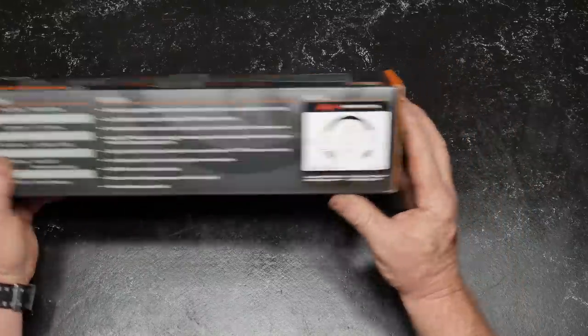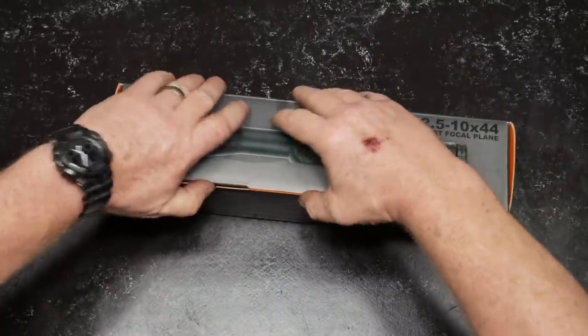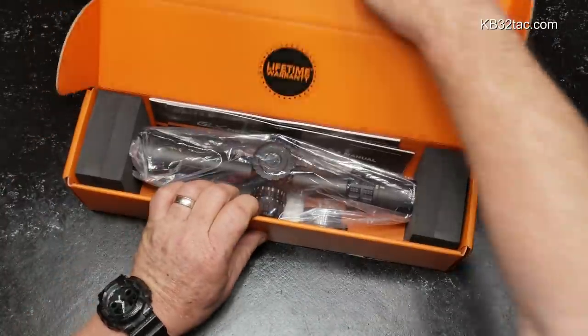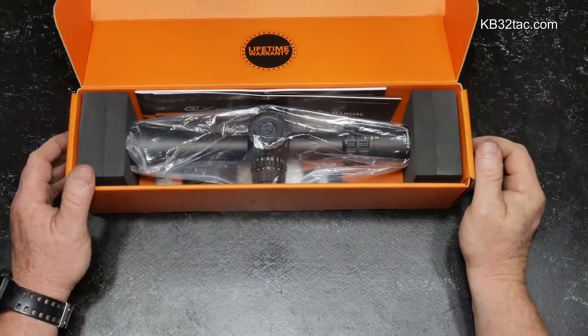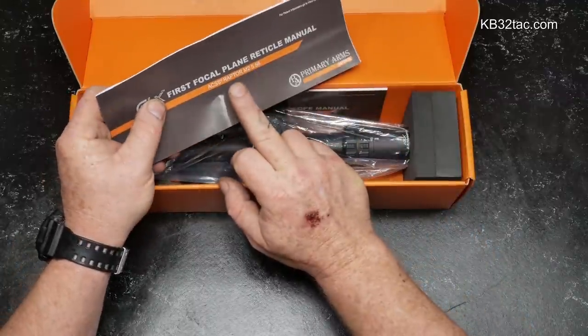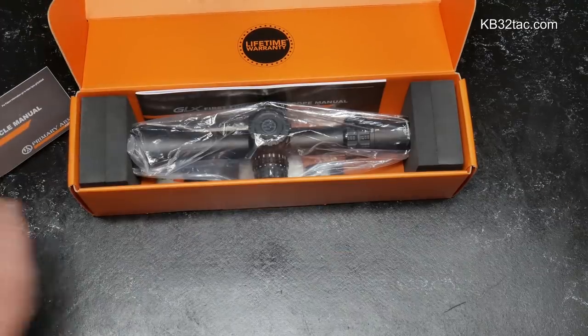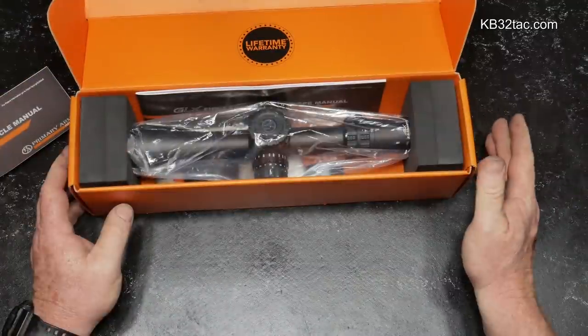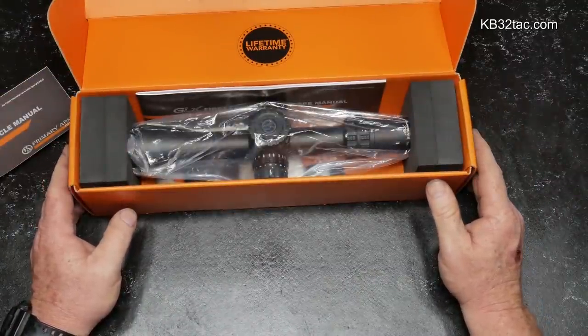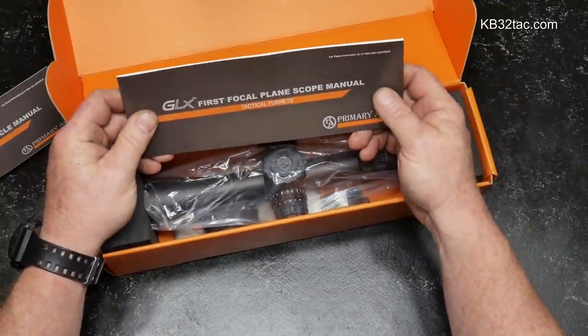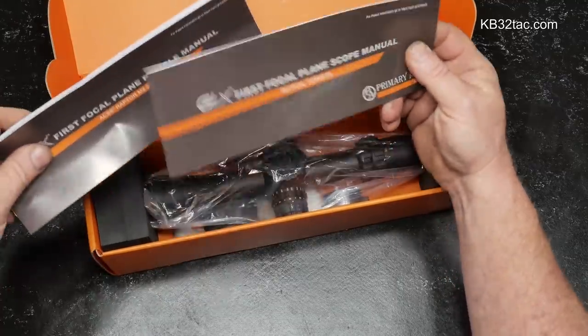So first thing we're going to do is talk about the scope itself. Let's get this thing out. I do have links on my website, kb32tac.com that will lead you over there to these guys. So you get the first focal plane reticle manual. This pertains to the Raptor.